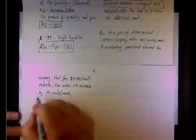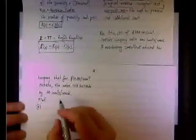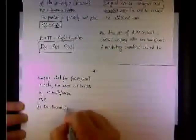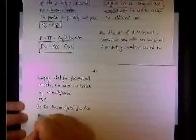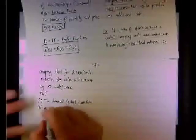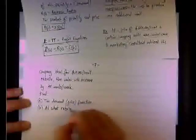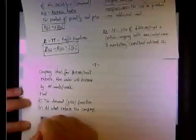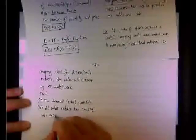We really need to do two things. The first thing, we need to find a price function. So find the demand or price function. B, what we want to do is find at what rebate the company will maximize its revenue.